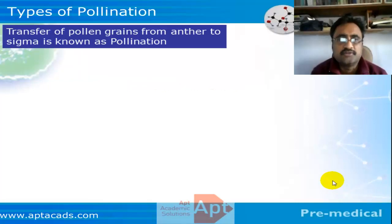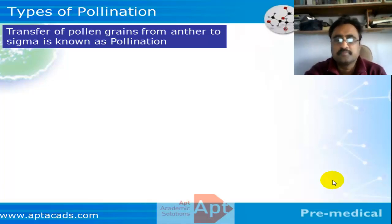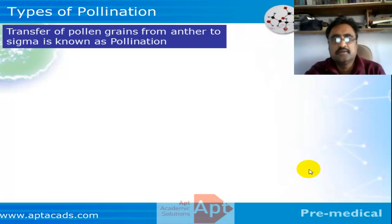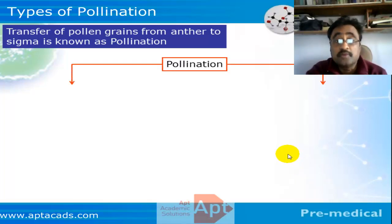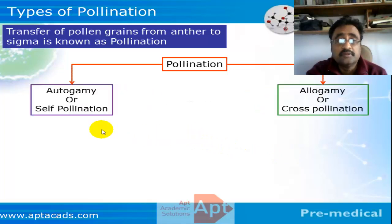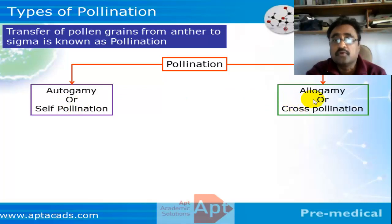Let's discuss pollination. Pollination is the transfer of pollen grains from anther to stigma. The very objective of pollination is that it eventually leads to fertilization. There are two types of pollination: one is self-pollination, what we call autogamy, and the second is cross-pollination, what we call allogamy.